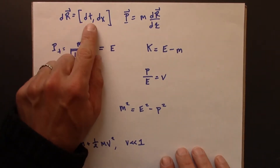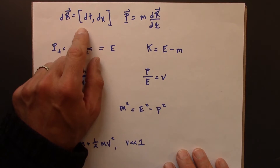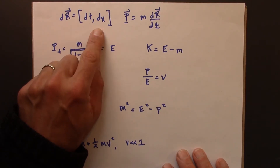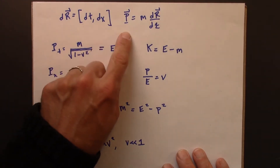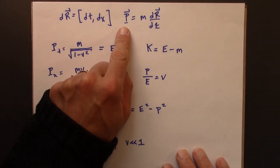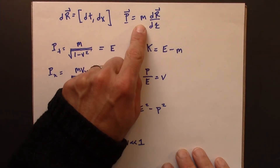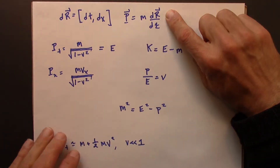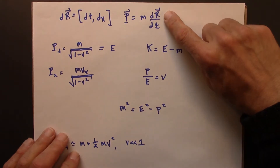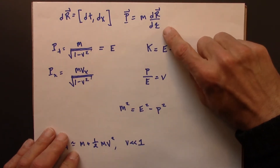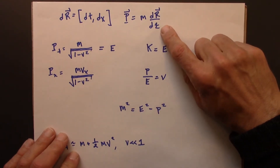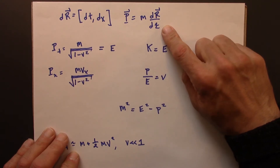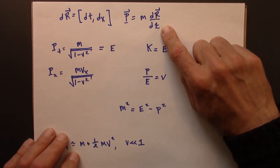To do so, we thought about displacements in space-time, not just in space — so dt and dx, possibly dy, dz. Momentum is m times this velocity-like term, the displacement in space-time. The key thing is we're dividing by the proper time, the time according to the object itself, d-tau.